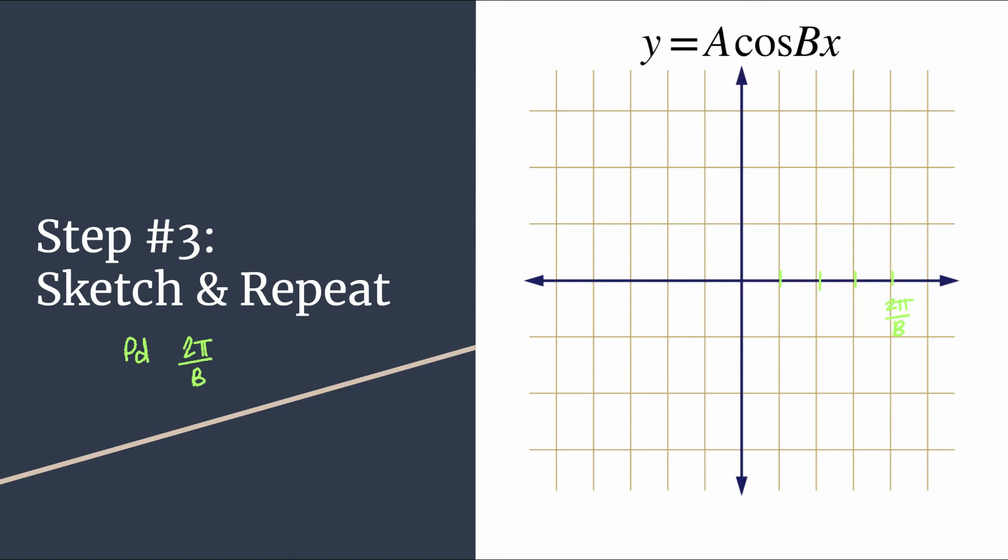And thinking back also to step one, you know that to find your horizontal scale, you just need to divide your period by four. In this case, let's just multiply by one fourth, does the same thing, but it's just a little easier to look at. Cancel out the common factor of two and you should be counting by pi over two B.